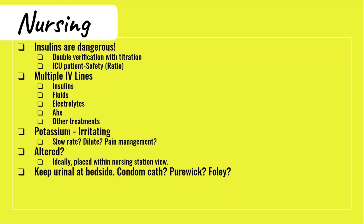Now let's get into nursing-specific tips. Insulins are very, very dangerous — you can easily kill somebody if you're not careful. Always have another nurse perform a double verification when you are starting and titrating insulin to stay safe. Early on, place many IVs into your patient. You'll be giving a variety of things including fluids, the insulin drip, replacing electrolytes, and if needed, antibiotics. You want to have at least two IVs so the patient gets everything in a timely manner.